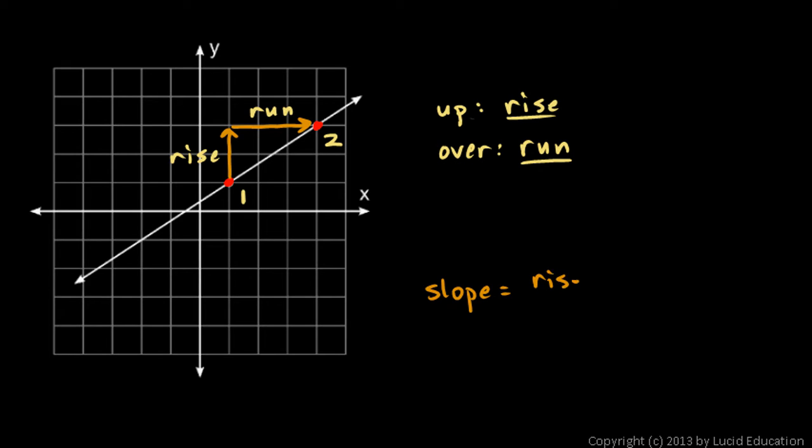Slope is rise over run. So it's a ratio. The ratio of rise over run, or you could just think of it as rise divided by run.